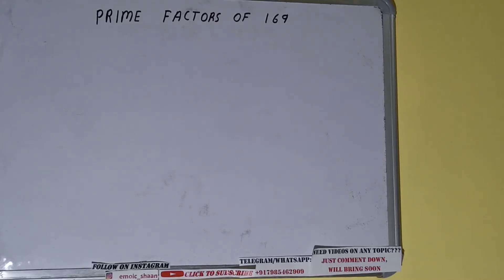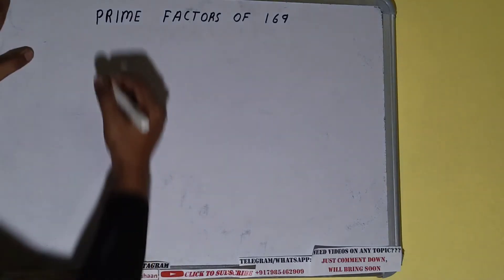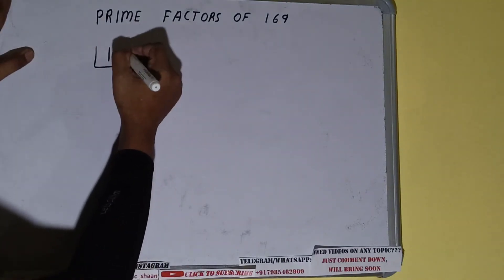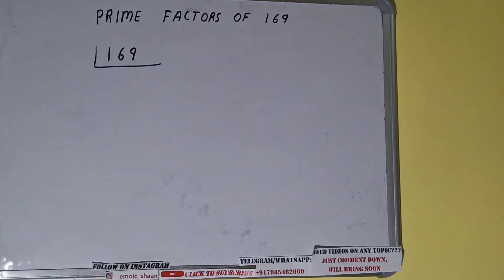Hello friends, in this video I'll be helping you with the prime factors of the number 169. So let's start. First of all, we need to write the number like this. The next thing we need to know about is what are prime numbers. Prime numbers are numbers that are divisible by one and the number itself, like 2, 3, 5, 7, and so on.